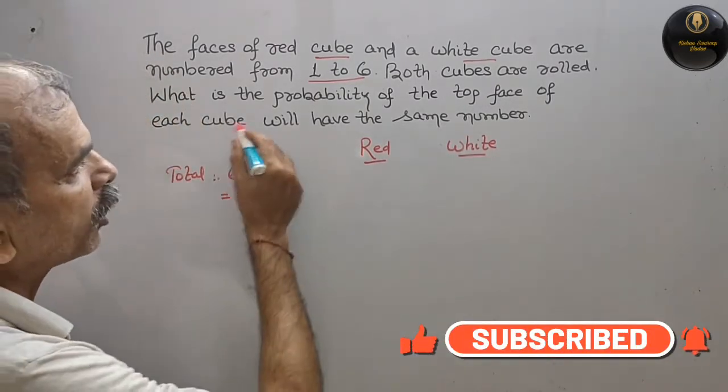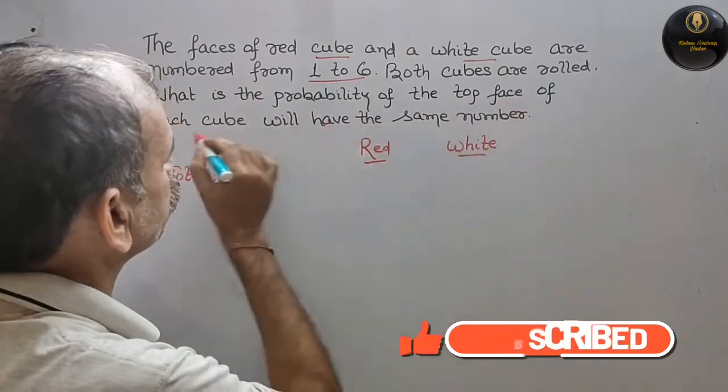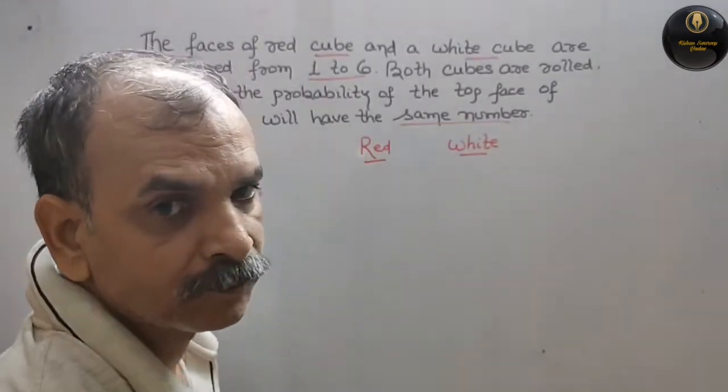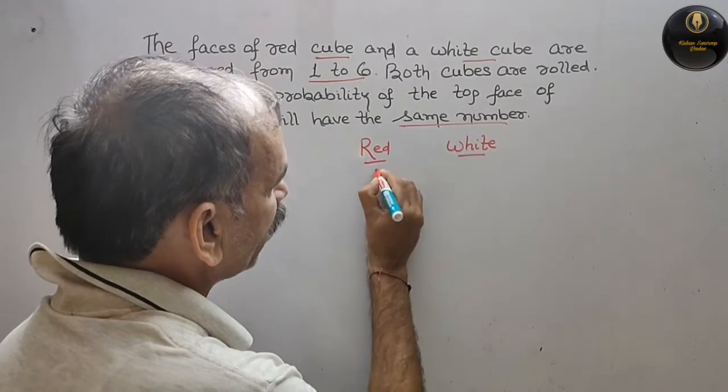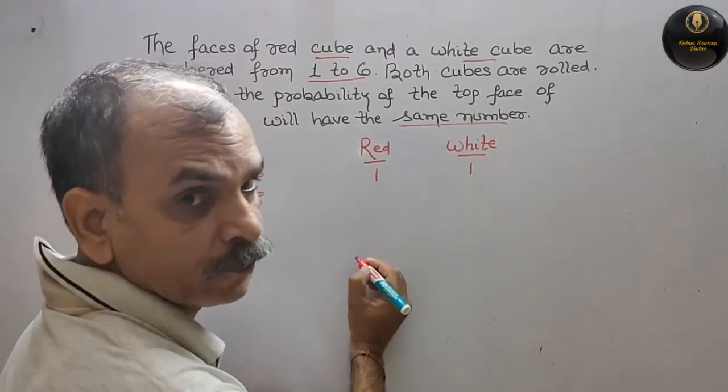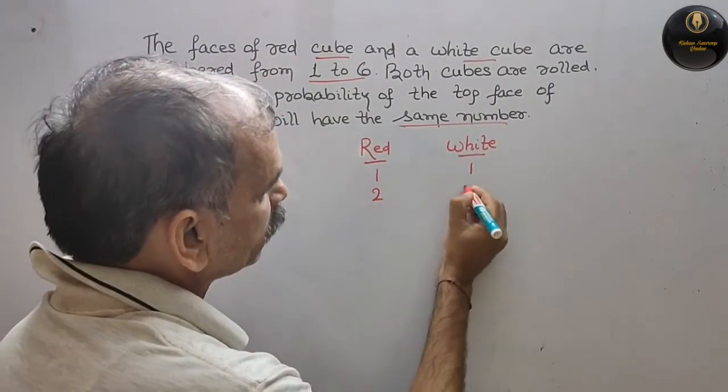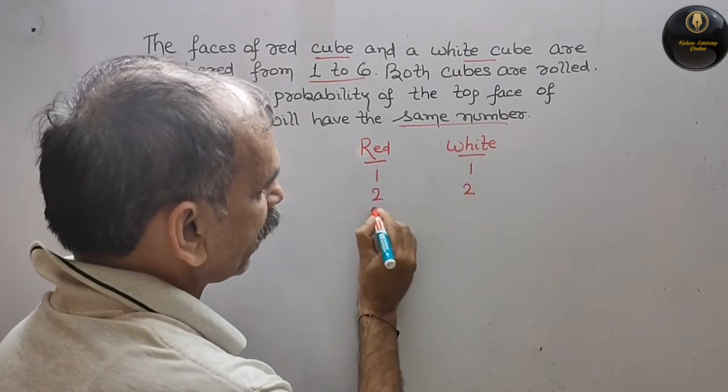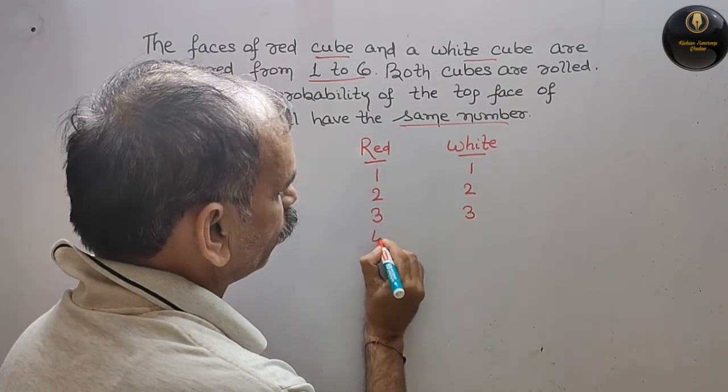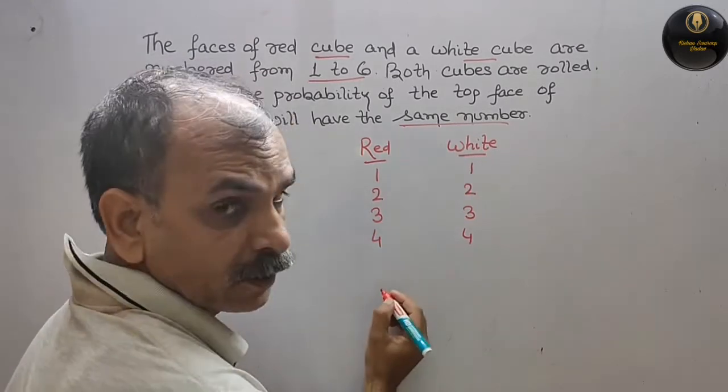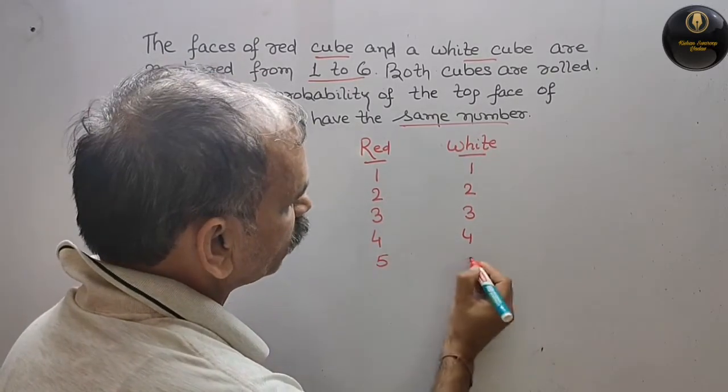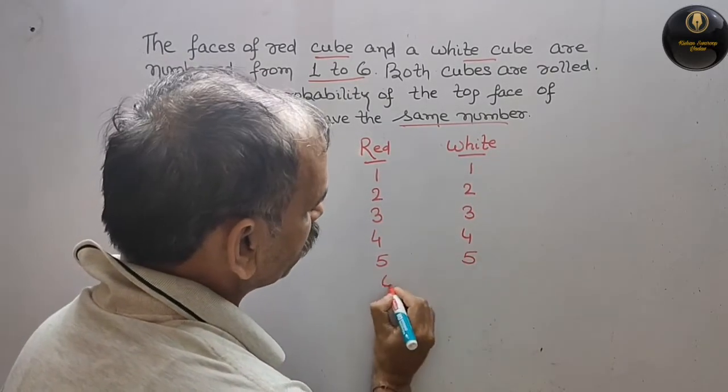What is the probability that the top face of each cube will have the same number? That means red may have 1, white may have 1, or 2-2, 3-3, 4-4, 5-5, 6-6.